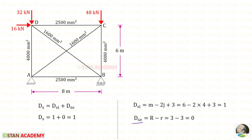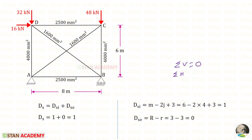DSE is the external degree of static indeterminacy. The formula is R minus r. The capital R is the number of reactions in the truss — there are two reactions at the hinged support and one at the roller support, so R is 3. Small r is the number of available equilibrium conditions: sigma V = 0, sigma H = 0, and sigma M = 0, so small r is 3. For DSE, we will get 0.